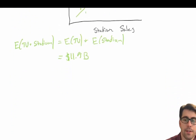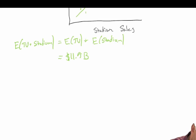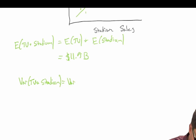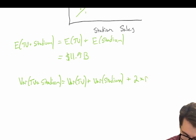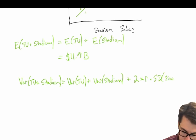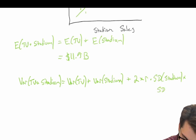What we do have to account for when calculating our standard deviation is the covariance, or correlation, between our two variables. The variance of TV plus Stadium equals the variance of TV plus the variance of Stadium plus two times the correlation coefficient times the standard deviation of Stadium times the standard deviation of TV.